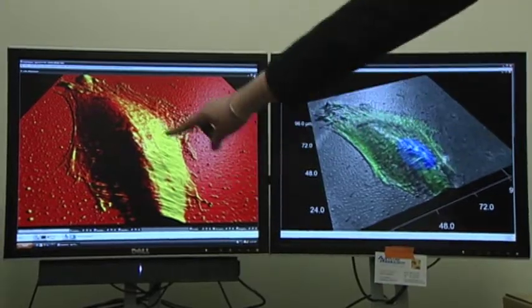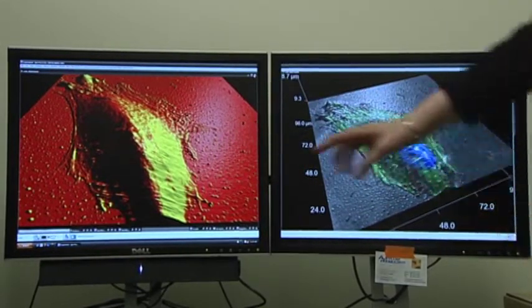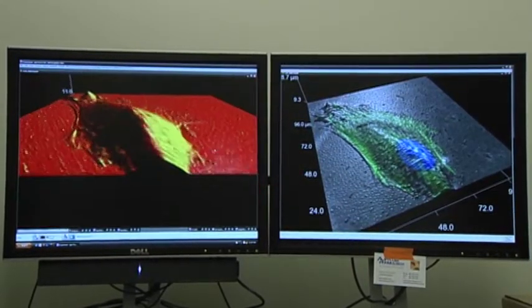So you can get sort of like a topography, sort of like mountains and things like that, but at a very small scale. So you can see what the structure of the cell looks like.